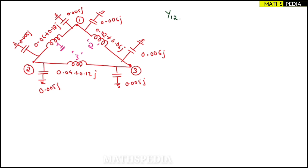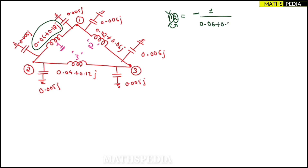Now for Y12, a non-diagonal element: look at what is between node one and node two. There is one impedance. For non-diagonal elements, always take the negative of the admittance — that is, minus one divided by the impedance between those nodes.